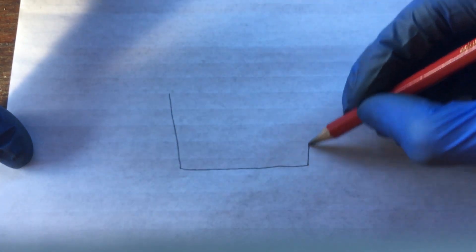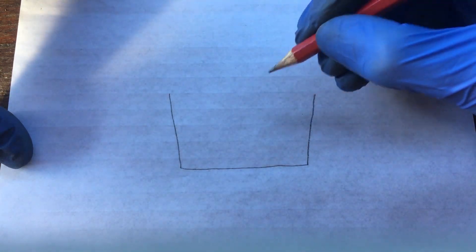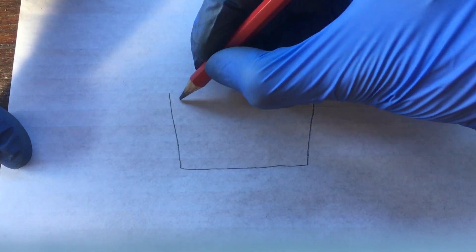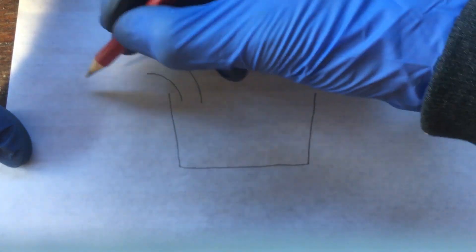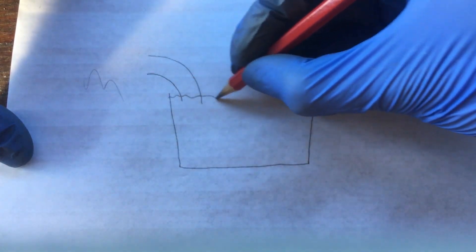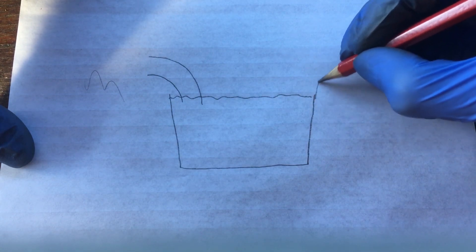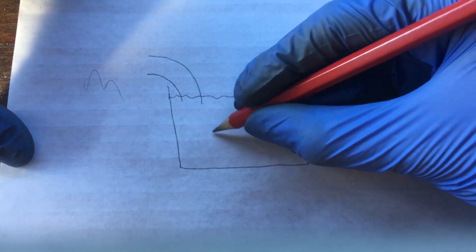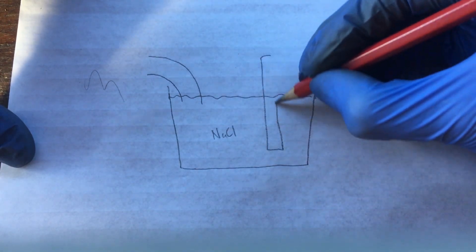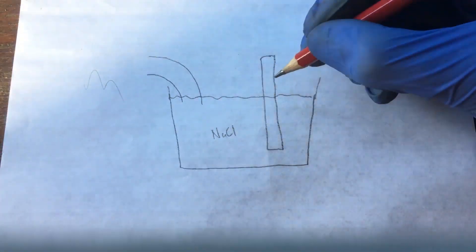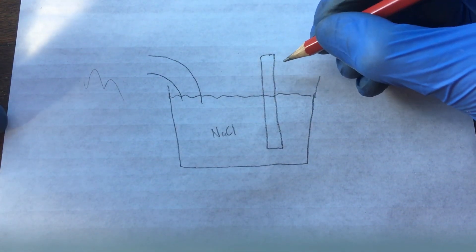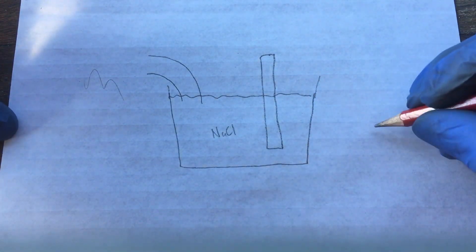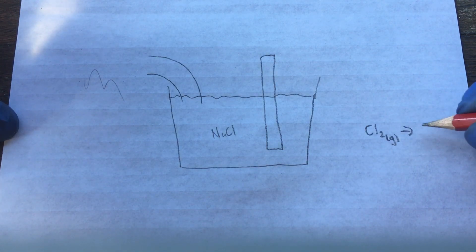So let's say this is a half cell for an electrochemical reaction. We have a salt bridge going off to another half cell over here. We have this filled with maybe sodium chloride solution. We have an electrode and what we want to do on this electrode, let's say it's the cathode of an electrochemical cell, what we want to do is reduce chlorine gas to chloride ions.